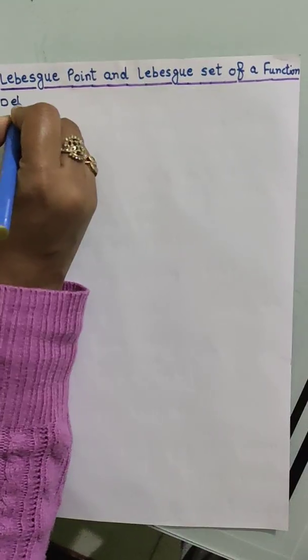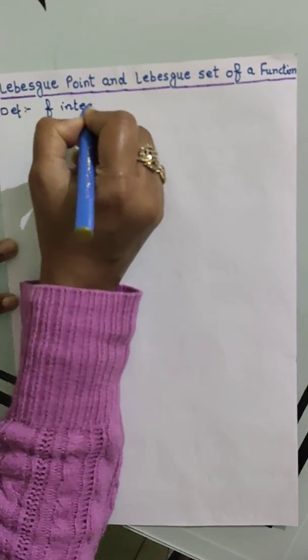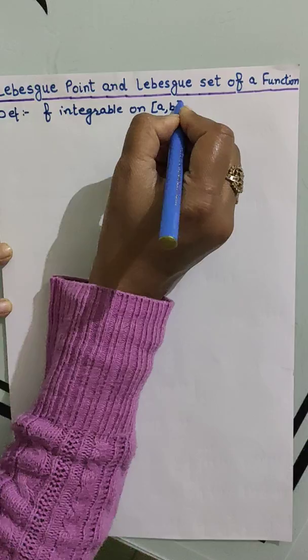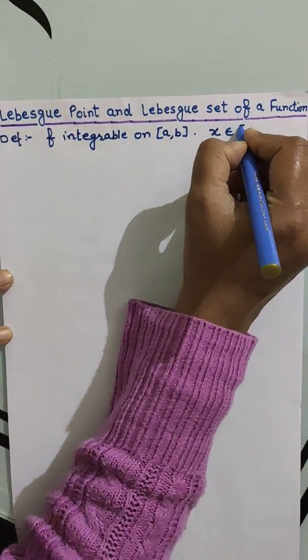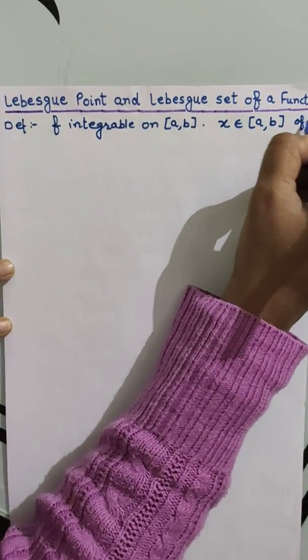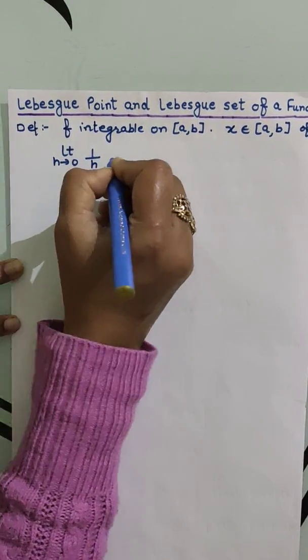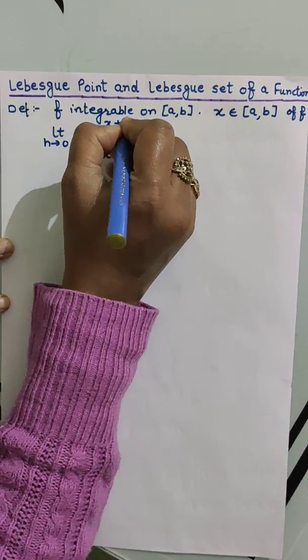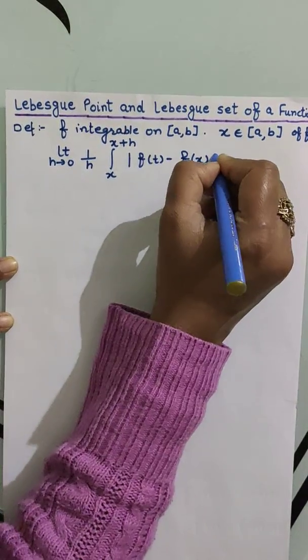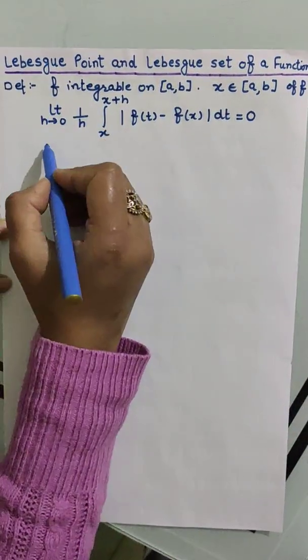Let f be an integrable function on interval [a,b]. Then a point x in [a,b] is said to be a Lebesgue point of f if lim[h→0] (1/h)∫[x to x+h] |f(t) - f(x)|dt = 0. If the point x satisfies this condition, then